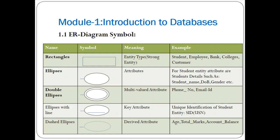The rectangle symbol is used to represent the entity type, drawn as a single-line rectangle box. If an entity has a single-line rectangle box, it is called a strong entity type, because that entity type has a unique identification attribute — meaning a primary key exists. For example, a student entity can be uniquely identified by a USN number or student ID, and an employee can be uniquely identified by an employee number.